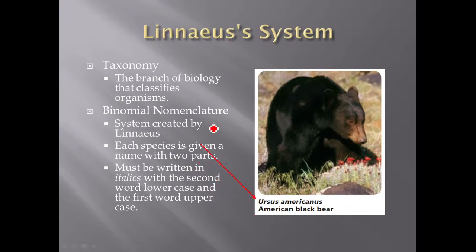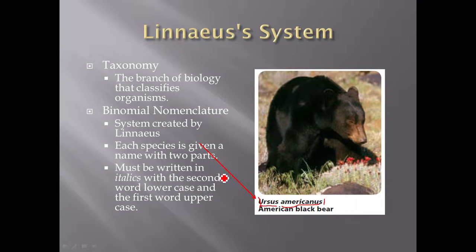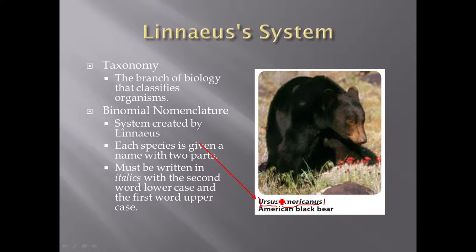Each species name has two parts. There's a first part — Ursus — and a second part called americanus. If you see this name, you are always going to have the American black bear. Whenever you have a Linnaean system name, it needs to be written in italics — that's how you know you are looking at Linnaeus' system. Now almost every single bear is going to have the word Ursus in front of it, but the second part is very specific to the species.